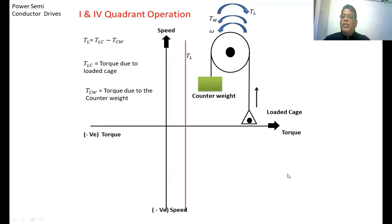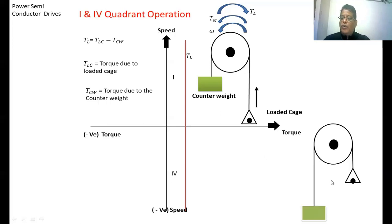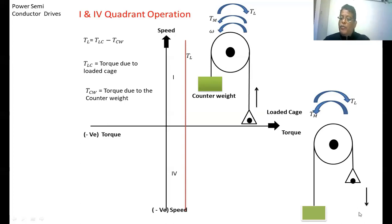In the fourth quadrant operation, the loaded case is coming downward. The load torque direction due to the loaded case and counterweight remains the same — clockwise. The motor torque, always opposing load torque, is anti-clockwise. However, to allow the case to move downward in a controlled manner, the motor rotates clockwise, giving deceleration to the load. So speed is negative and torque is positive, but the power is negative — representing braking, which controls the speed at which the case descends.